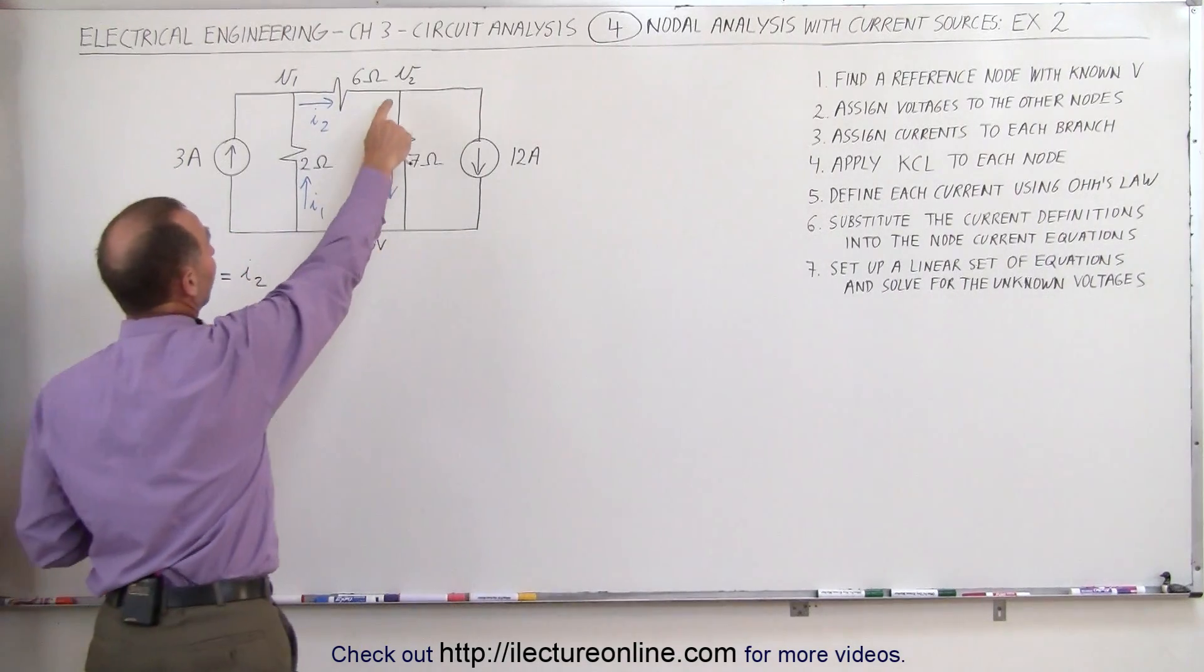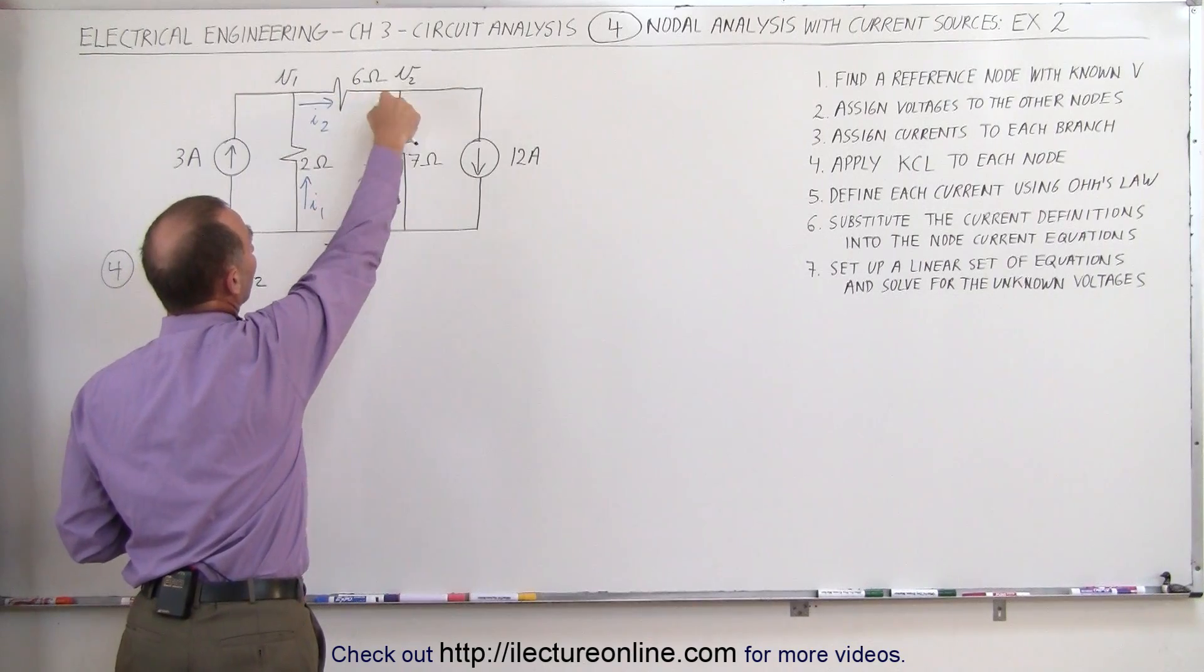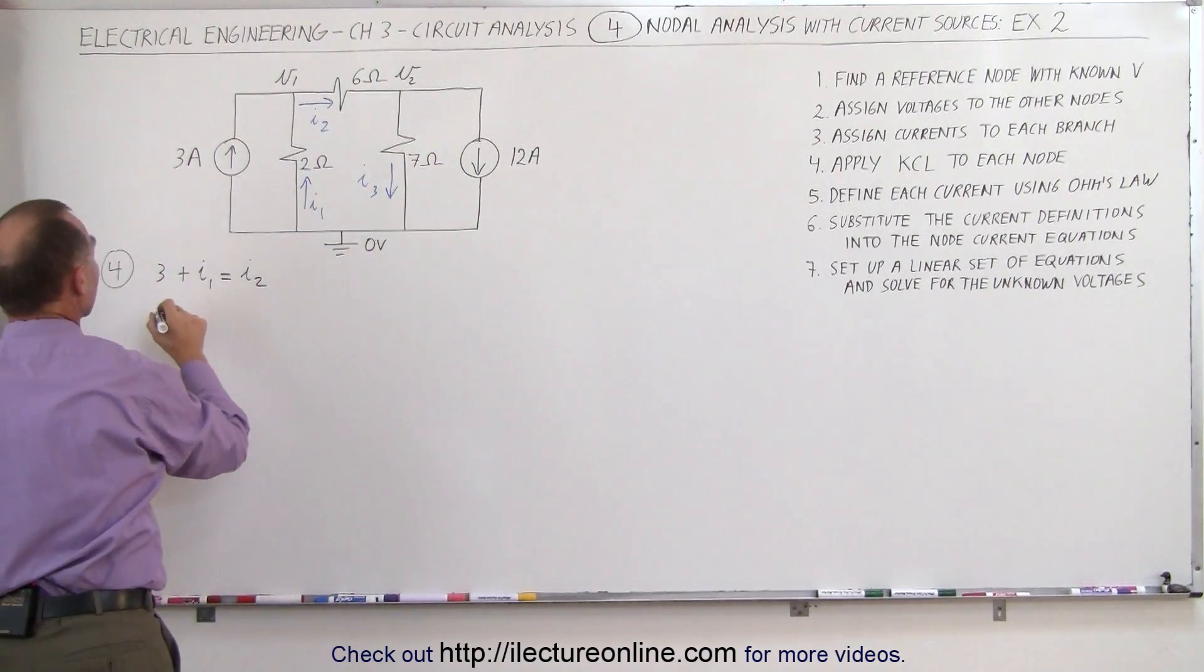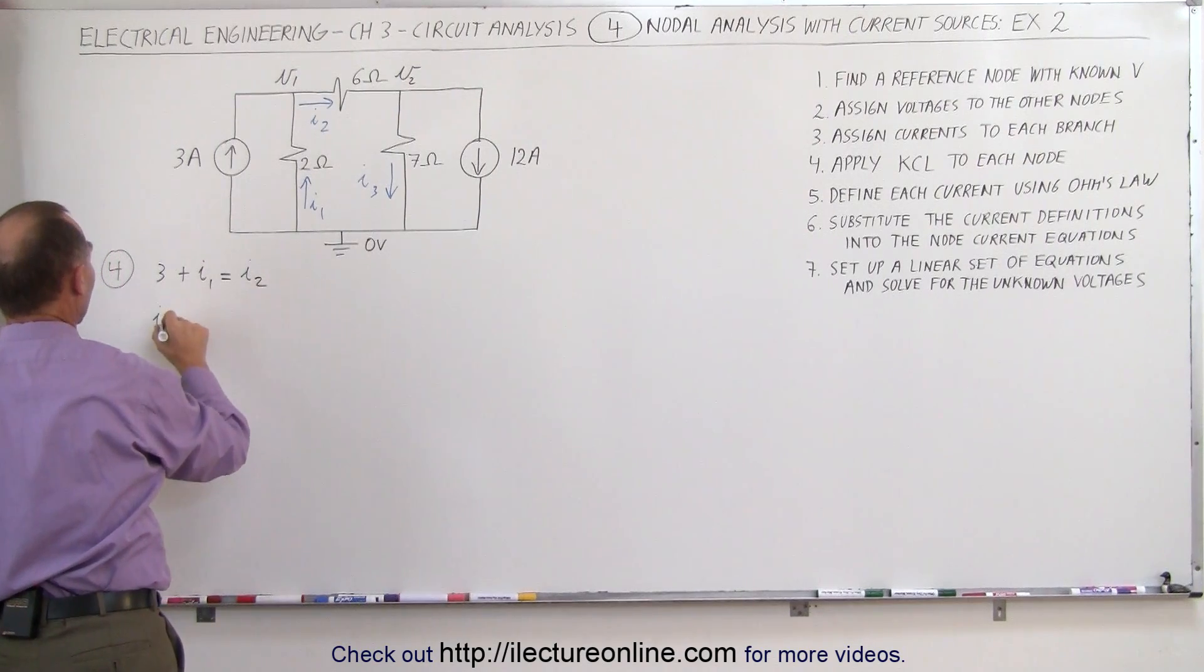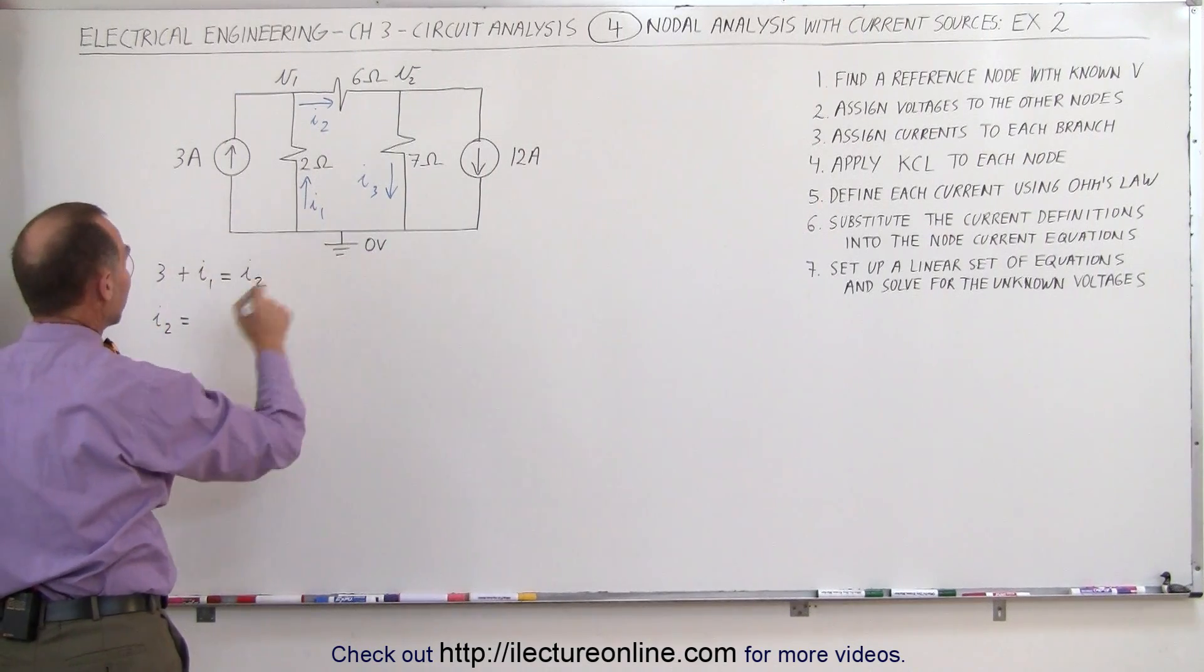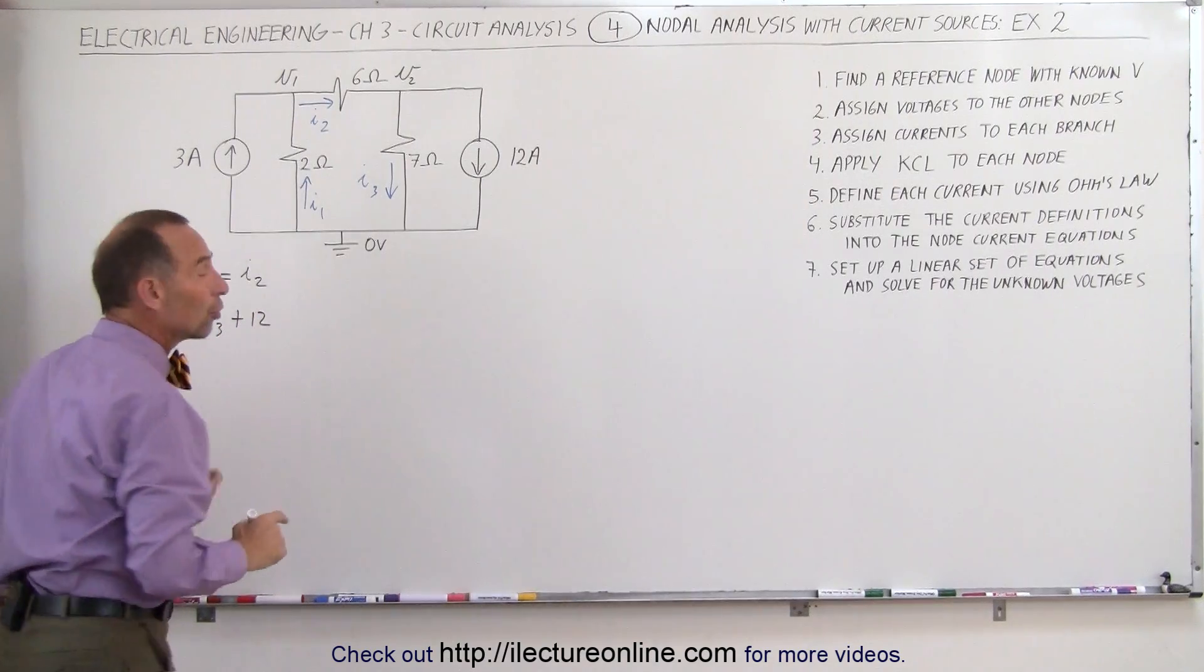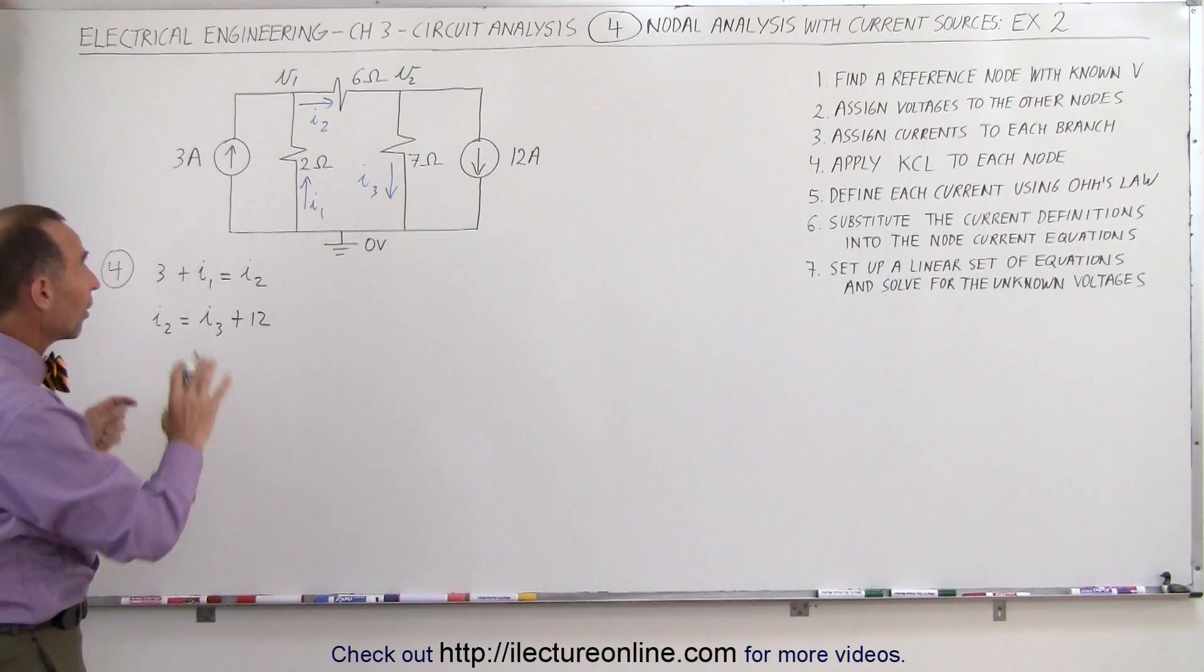The next equation is from the second node. We see that i2 is entering, i3 is leaving, and 12 amps are leaving. That means that all the currents entering which is i2 equals the currents leaving, i3 plus 12 amps. Those are the two equations that we're going to use to solve this problem.